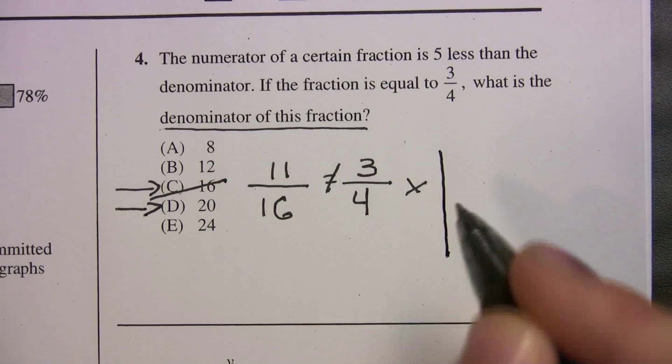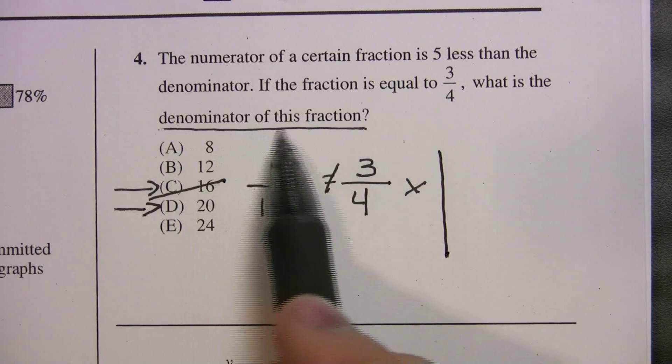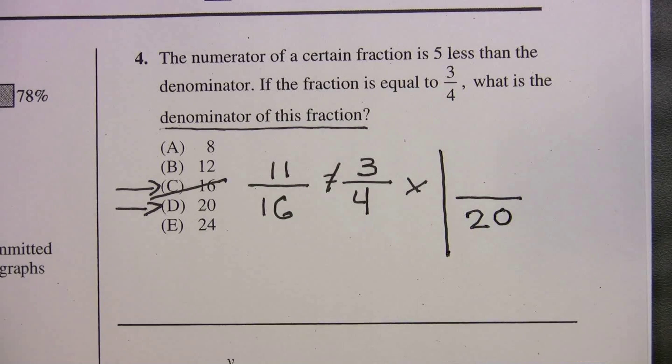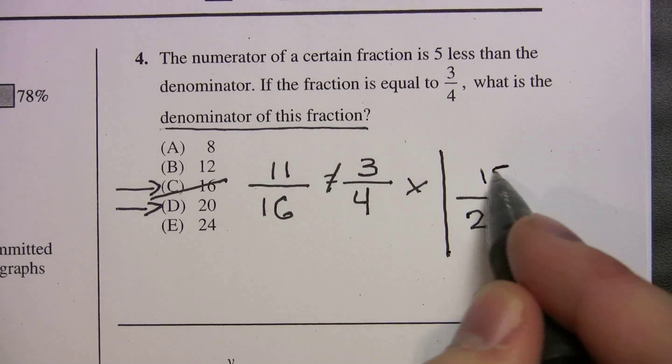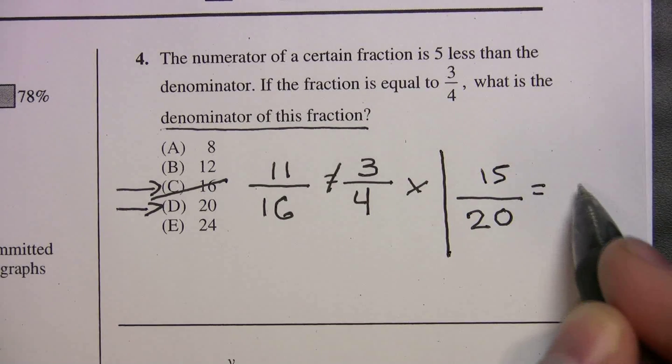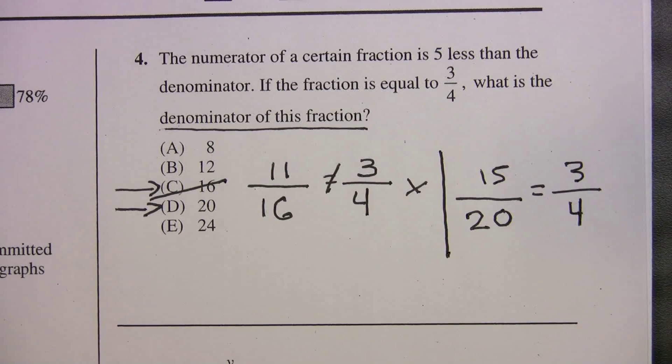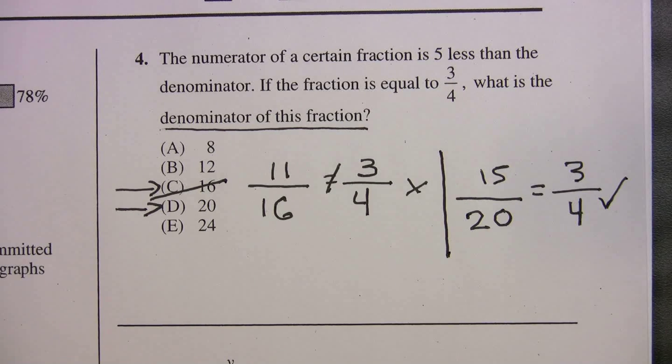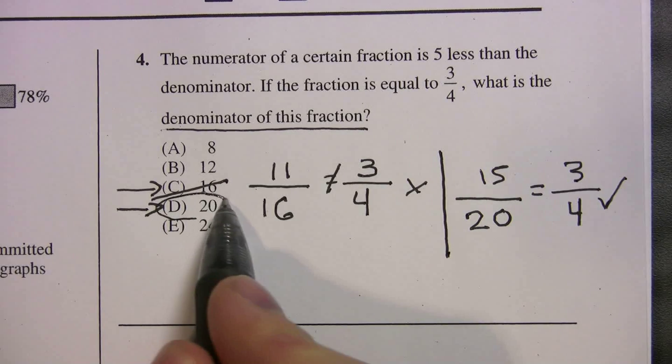Let's see what happens when we pick choice D. We're assuming D is correct, so the denominator of the fraction equals 20. What's the numerator? 5 less. So that's 15. Does 15 twentieths equal 3 fourths? And if you can't see it right away, you can always plug into the calculator, but yes, 15 twentieths does equal 3 fourths. So your answer is choice D.